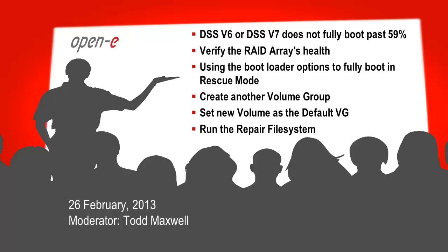We're going to go through the 59% pass issue, verify the RAID array's health, and then do the bootloader — the option to fully boot in rescue mode. I'll show you the command in your boot options. Once we boot up, we're going to create another volume group, set that as the default volume group, then reboot and run the repair file system. This will help you keep the system uptime better in case those late-hour outages happen.